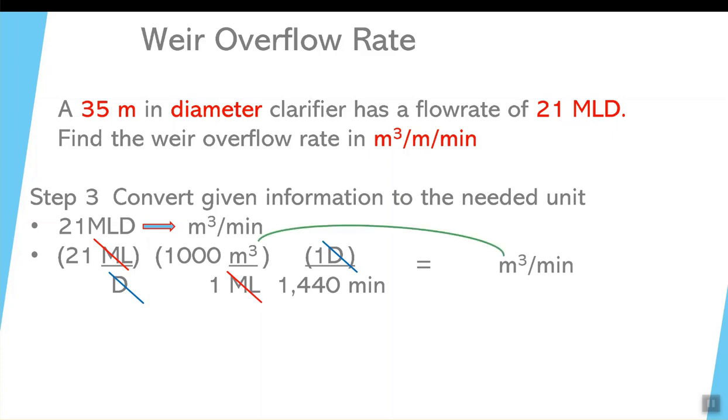When we look at the units, cubic meters is left on the top and minutes is left on the bottom. So the left side does equal the right side. That's the unit that we want. And the answer for this is approximately 14.583 cubic meters per minute.